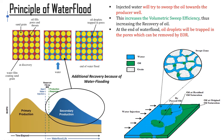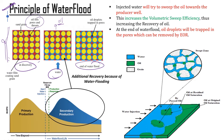Coming to the principle of water flooding: at discovery, sand grains are coated with water and pores between sand grains are filled with oil. As water flooding proceeds, oil is swept toward the producer well. At the end of the waterflood, oil droplets remain trapped in the pores — this is the immobile oil. To produce this immobile oil I will go for an EOR project.